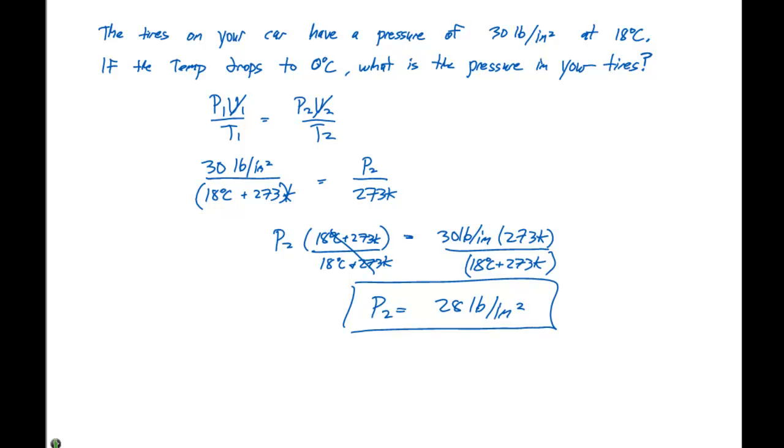To recap, we use the combined gas law, which allows us to look at initial and final conditions. We are changing the temperature from 18 degrees Celsius to 0 degrees Celsius, and we need to solve for what our pressure is.